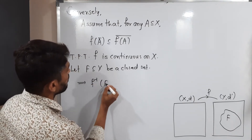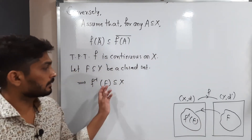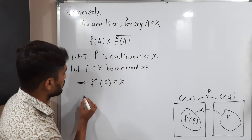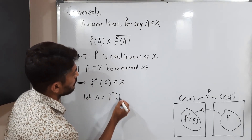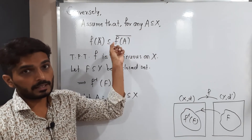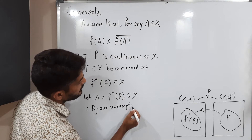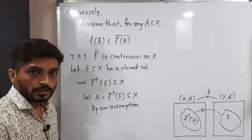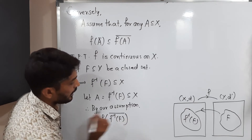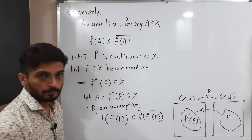Clearly, f⁻¹(F) ⊆ X. Let A = f⁻¹(F), which is a subset of X. By our assumption, the condition holds for any subset of X. Therefore, applying the assumption to A: f(Ā) ⊆ f(A)̄. Substituting A = f⁻¹(F), we write f(f⁻¹(F)̄) ⊆ f(f⁻¹(F))̄.